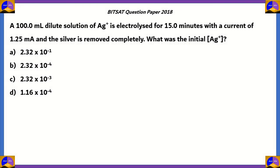The initial concentration of silver ions is option D: 1.16×10⁻⁴ molar. To summarize: we found the volume, then the charge flowing through the electrolysis, then the moles of electrons and silver ions, and used molarity as a concentration term to find the initial Ag⁺ concentration.